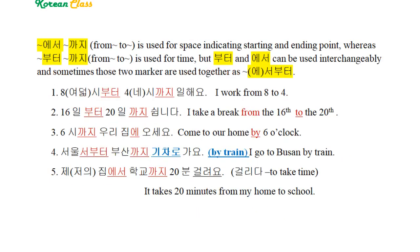에서까지, meaning 'from/to', is used for space, indicating starting and ending points. Whereas 부터까지, also meaning 'from/to', is used for time. But 부터 and 에서 can be used interchangeably, and sometimes those two markers are used together as 에서부터.